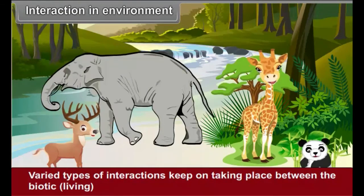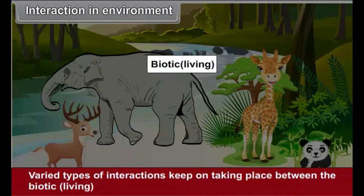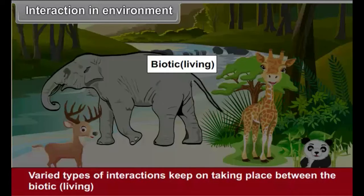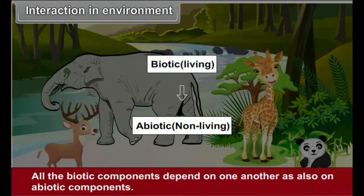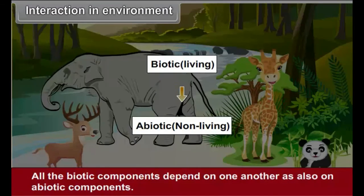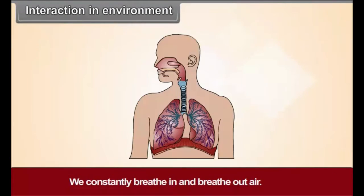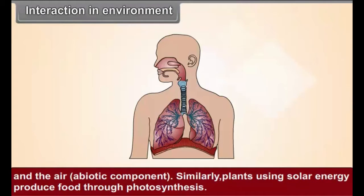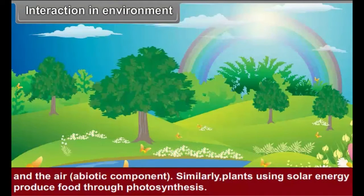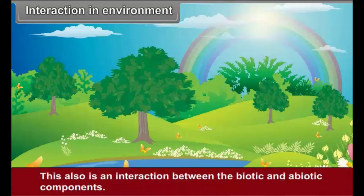Interactions in Environment: Varied types of interactions keep on taking place between the biotic, i.e. living, and abiotic, i.e. non-living, components of natural environment. All the biotic components depend on one another as also on abiotic components. We constantly breathe in and breathe out air — this is an interaction between us, a biotic component, and the air, an abiotic component. Similarly, plants using solar energy produce food through photosynthesis, which is also an interaction between biotic and abiotic components.